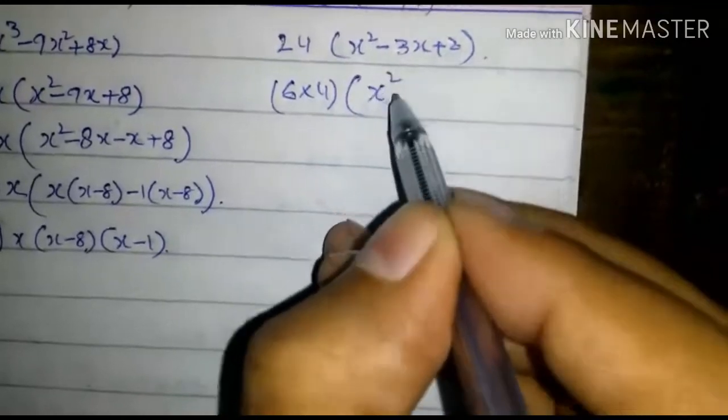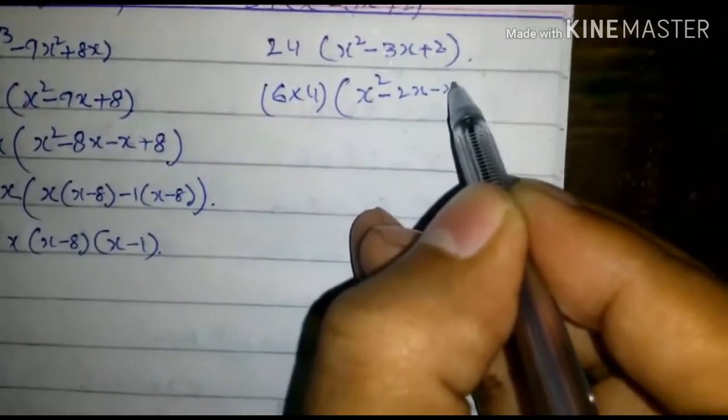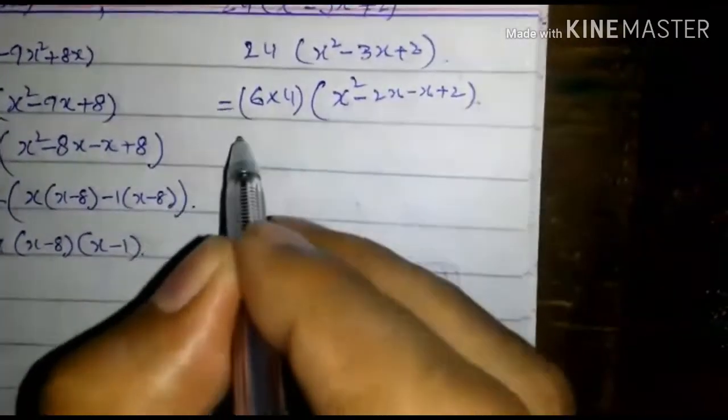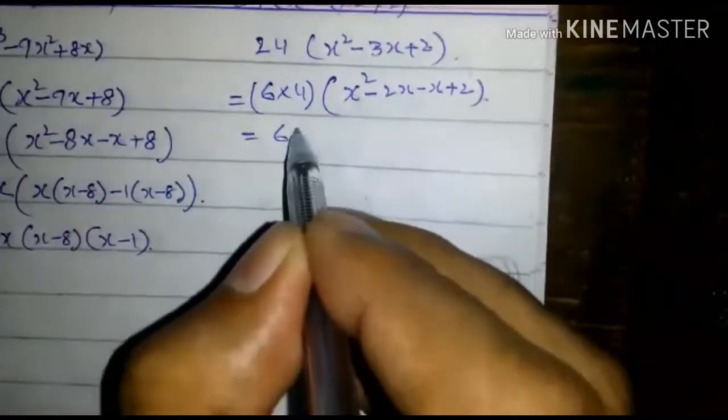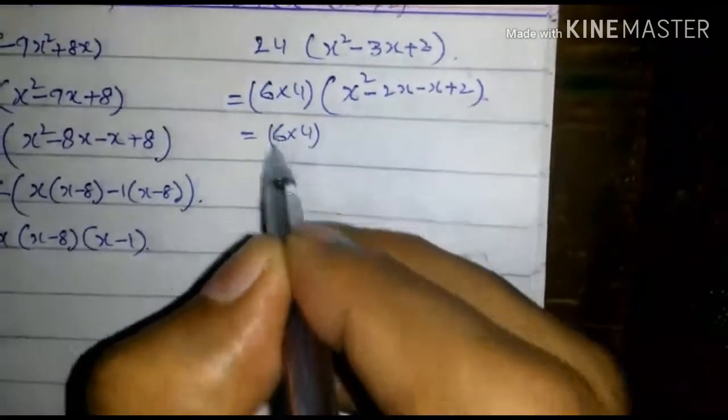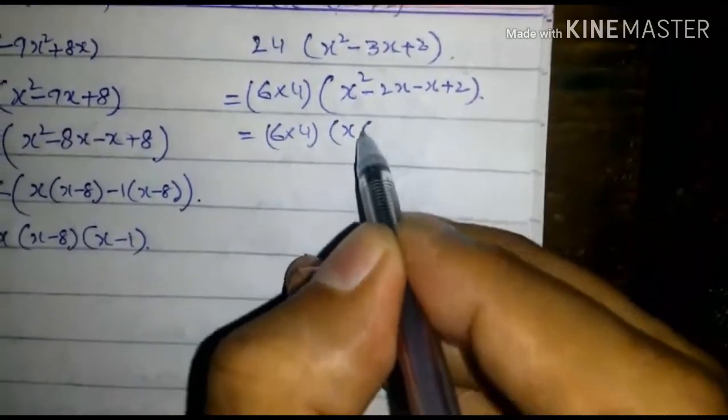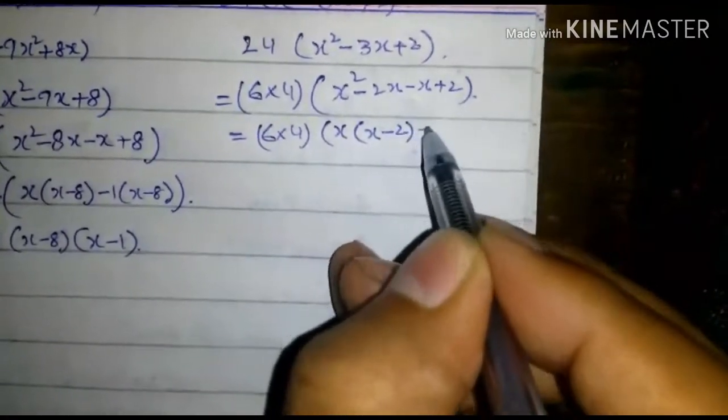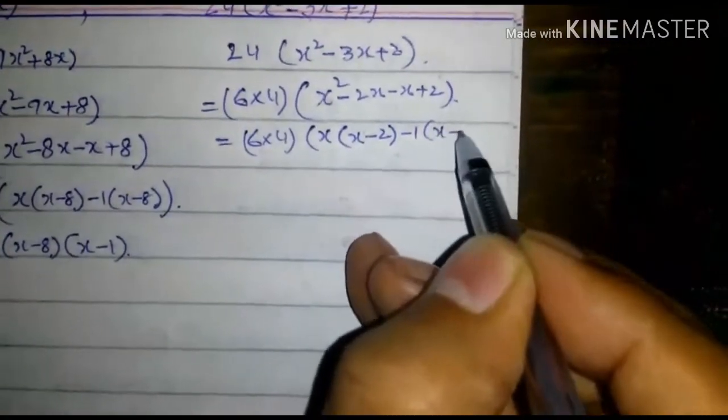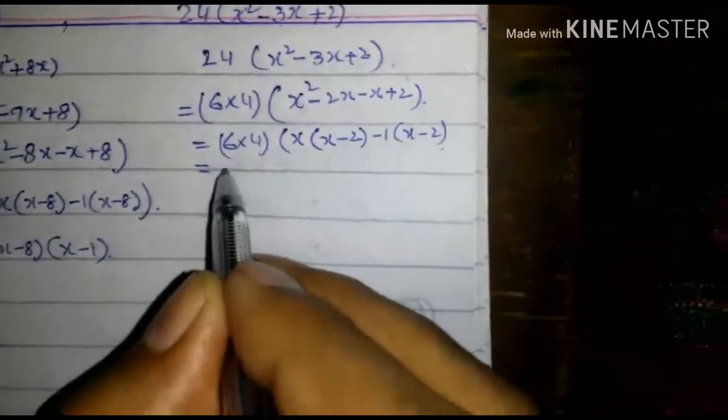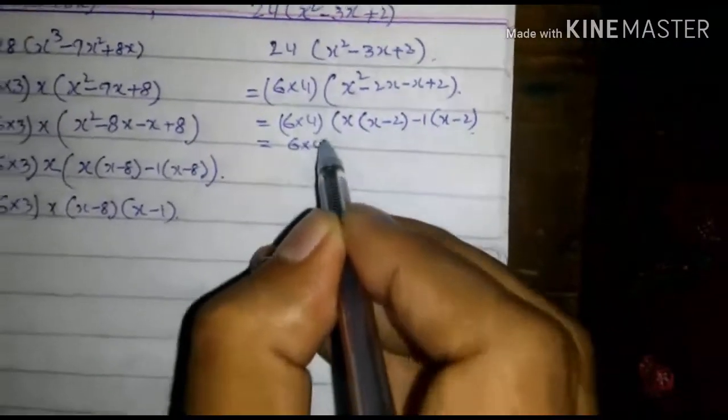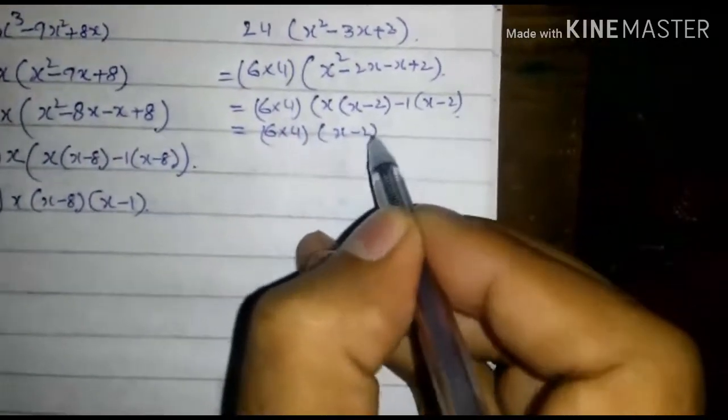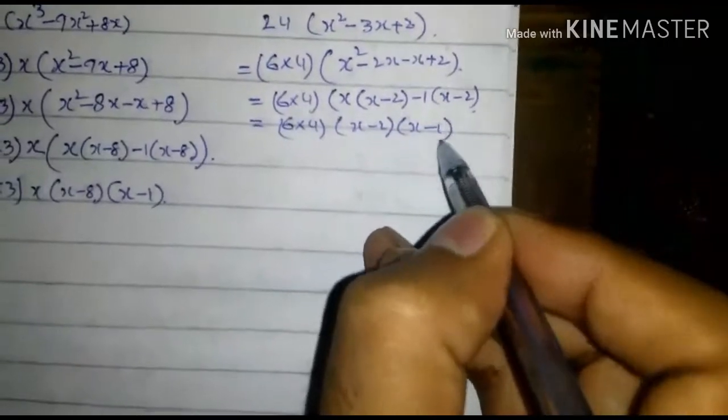x² - 2x - x + 2, that is equal to 6 into 4 into x(x - 2) minus 1 common, (x - 2). So 6 into 4 into (x - 2) into (x - 1).